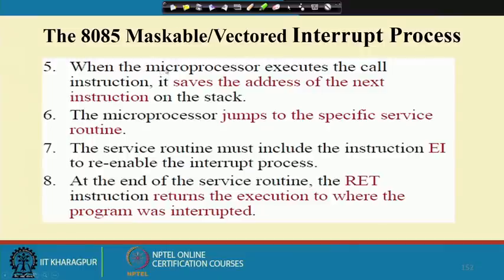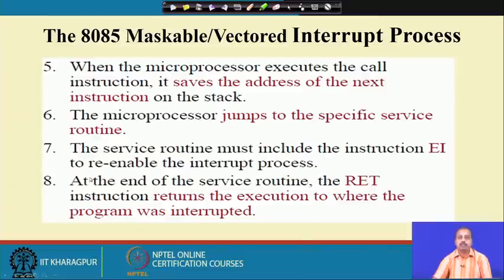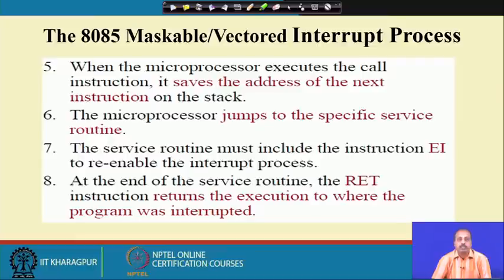When the processor executes the call instruction, it saves the address of the next instruction on the stack, then jumps to the specific service routine. The service routine must include the EI instruction to re-enable the interrupt process, and there should be a return instruction at the end of the service routine so execution returns from the ISR.